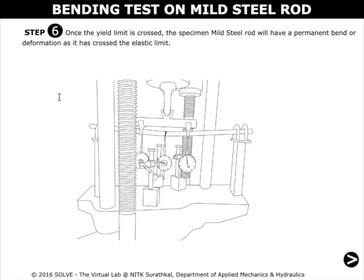Once the yield limit is crossed, the mild steel rod specimen will have a permanent bend or deformation, as it has crossed the elastic limit.